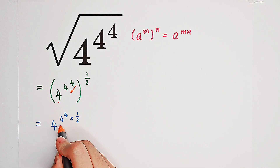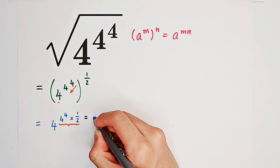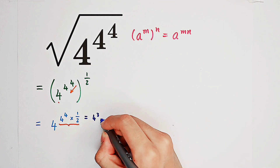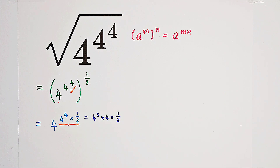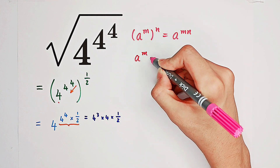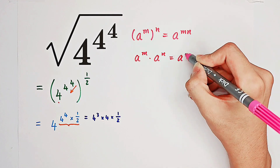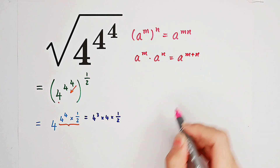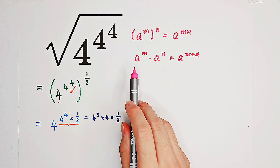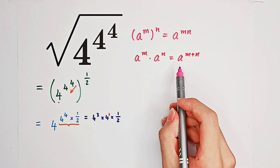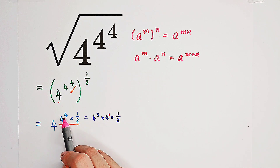So how shall we deal with this exponent? It can actually be written as 4 to the power of 3, times 4, then times 1 over 2. Using the formula a to the power of m times a to the power of n equals a to the power of m plus n: 4 to the power of 3 times 4 is just 4 to the power of 3 times 4 to the power of 1, which equals 4 to the power of 3 plus 1, which is 4 to the power of 4.